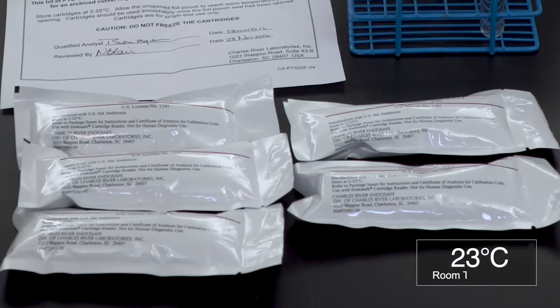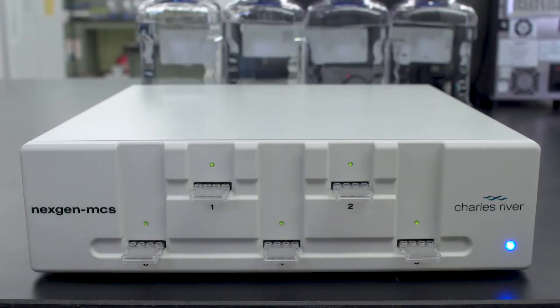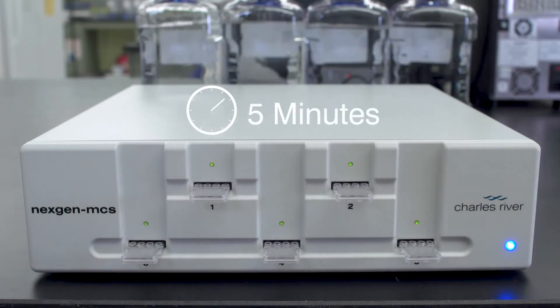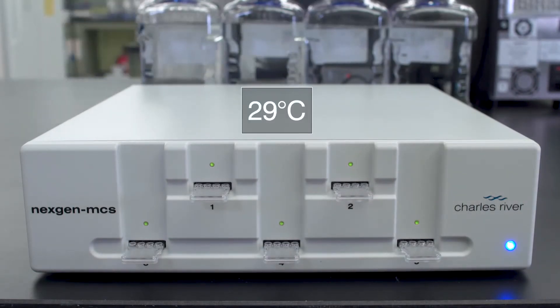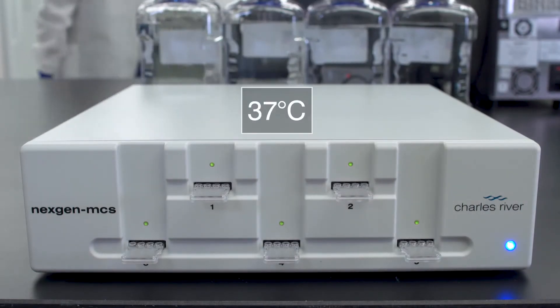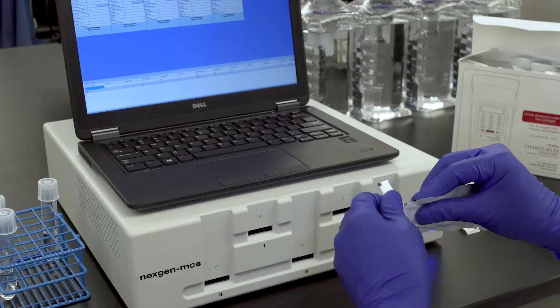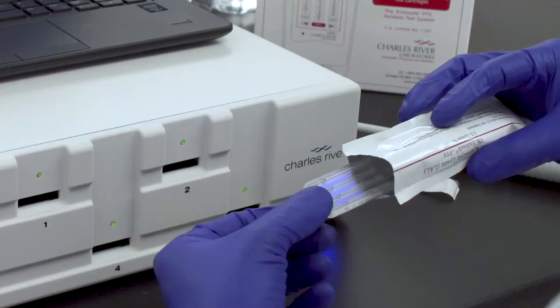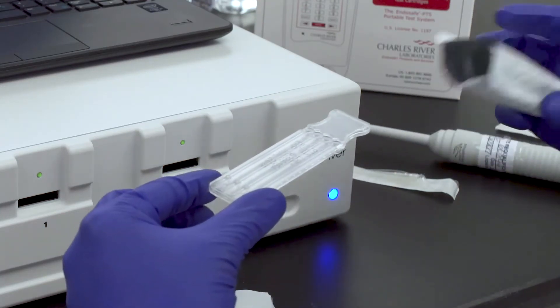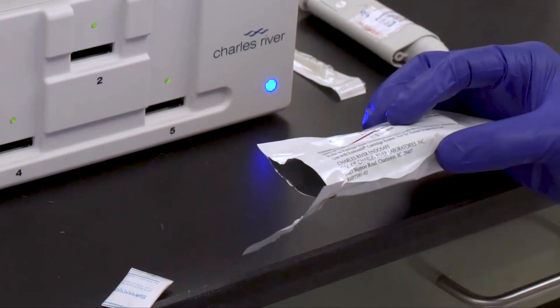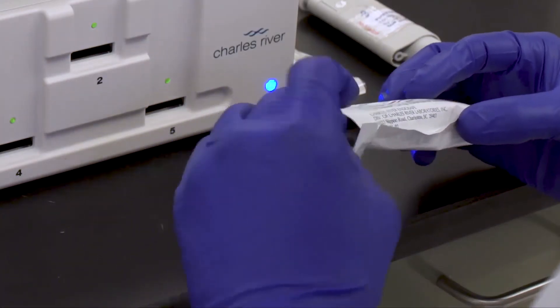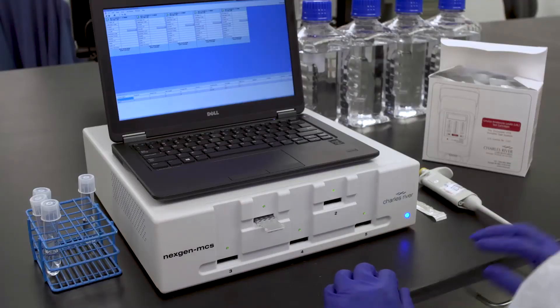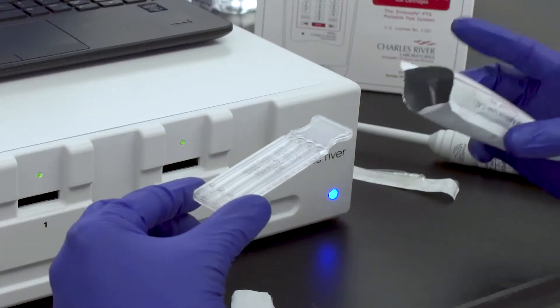Please allow your cartridges to come to room temperature before removing them from the pouch. The system will perform a self-test and will take approximately five minutes to reach the appropriate 37 degrees Celsius. Remove your cartridge from its pouch. Take care to touch only the handle or edges of the cartridge.